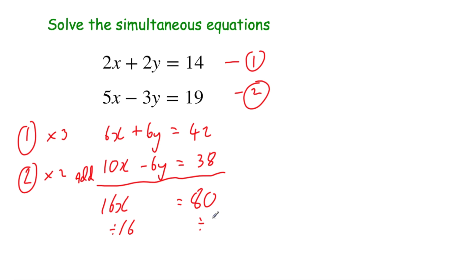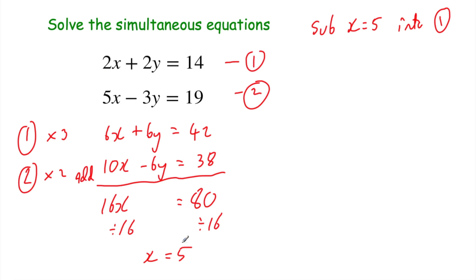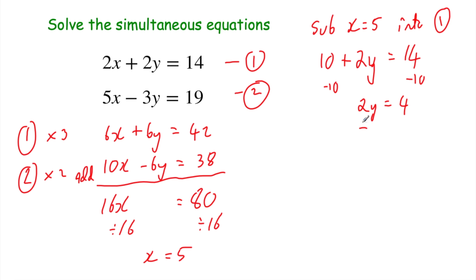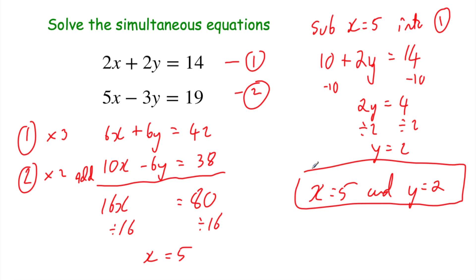Dividing by 16 gives x = 5. Substituting x = 5 into equation 1: 2 times 5 is 10, plus 2y = 14. Taking 10 from both sides: 2y = 4. Dividing by 2: y = 2. So x = 5 and y = 2 — that's our answer. Checking in equation 2: 5(5) − 3(2) = 25 − 6 = 19, which equals 19 — so we're right.